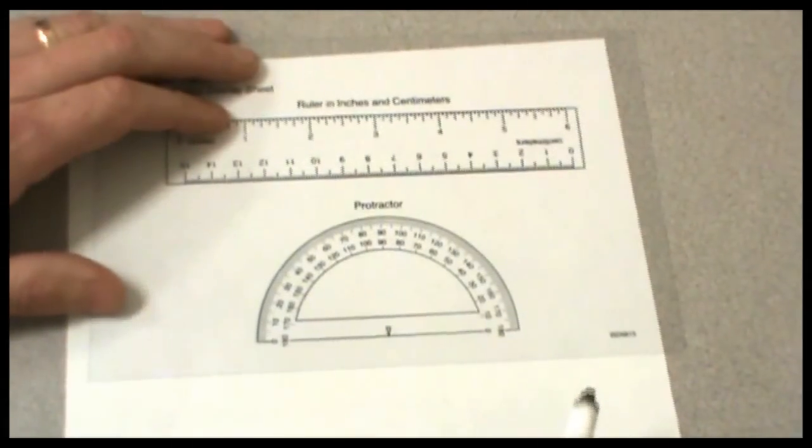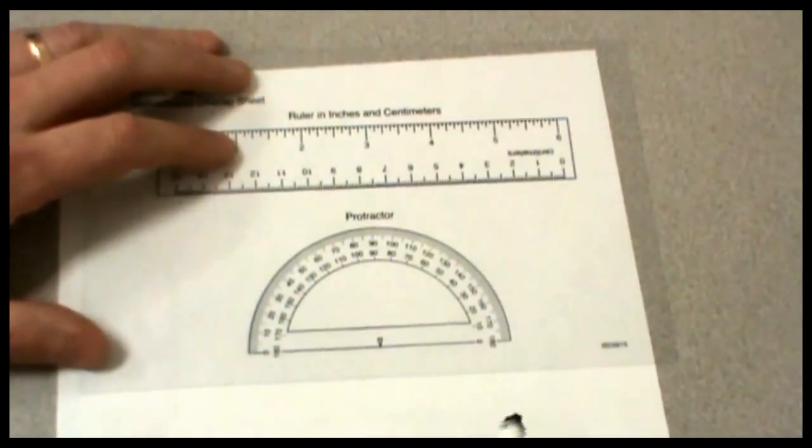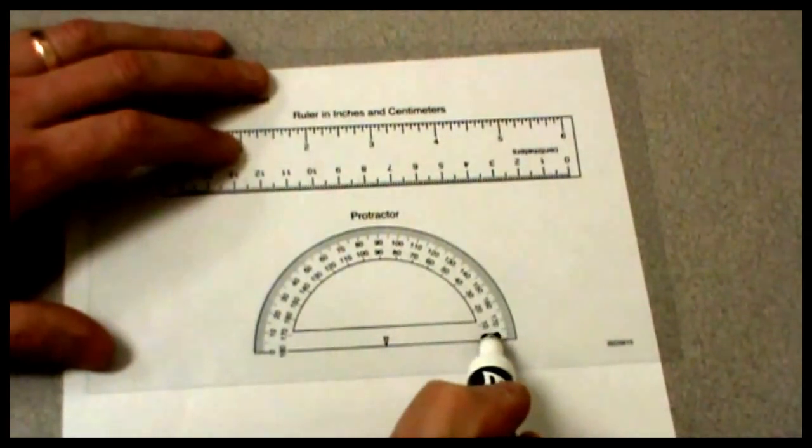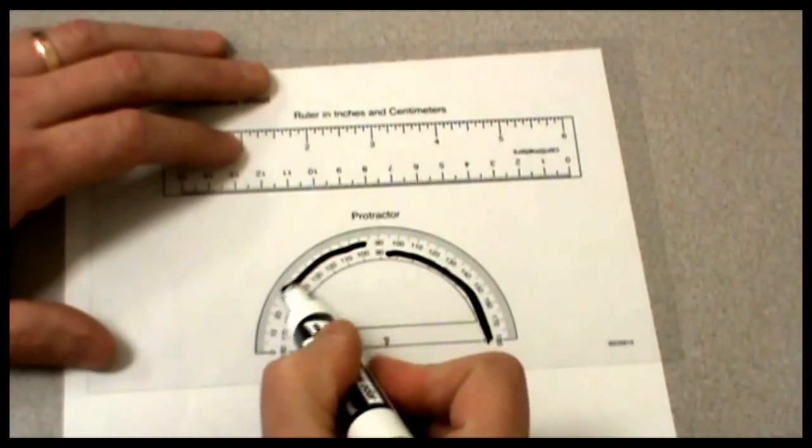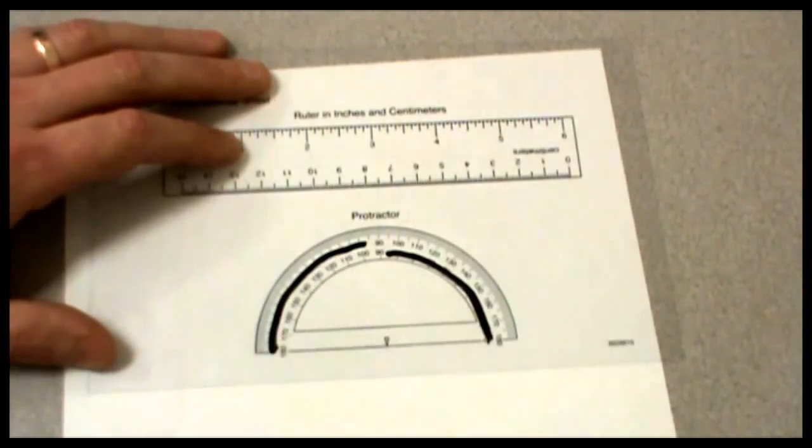I'm ready now to go ahead and measure some obtuse angles. Obtuse angles mean that we're not going to use any of the numbers less than 90 degrees. So, I've blacked out all the numbers that are less than 90.